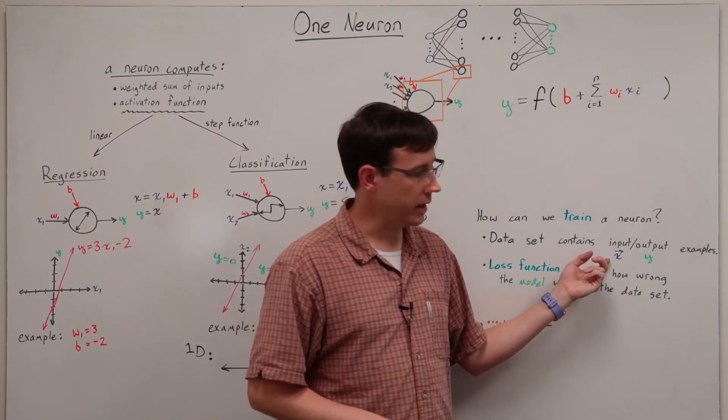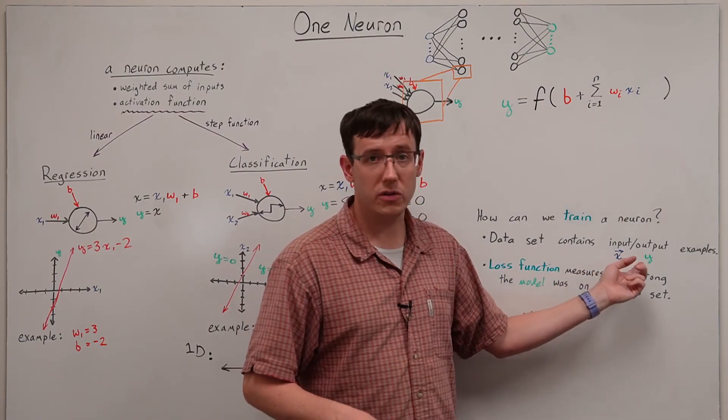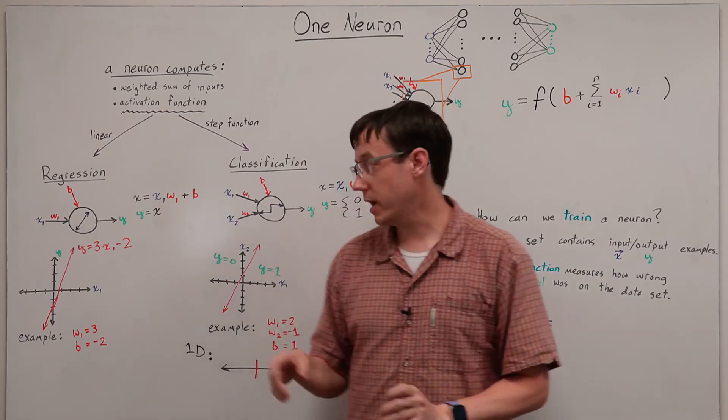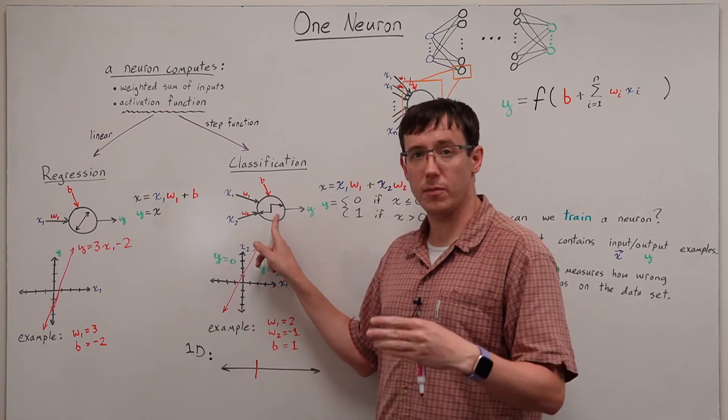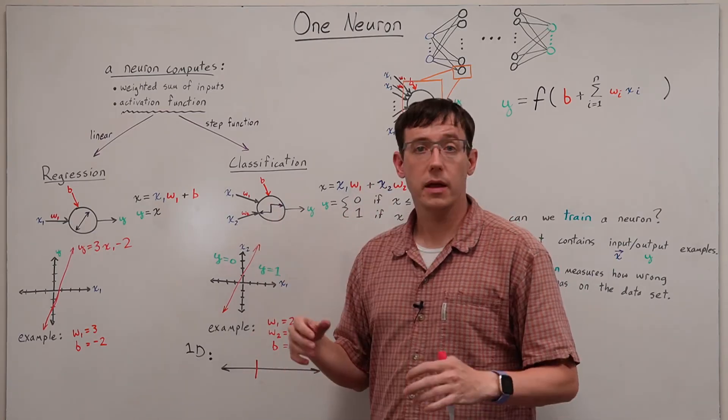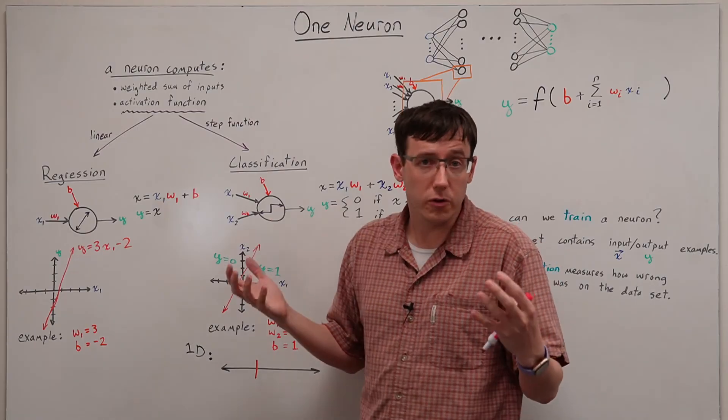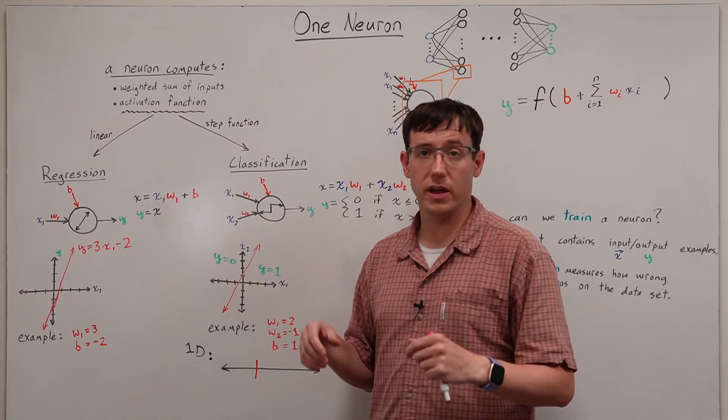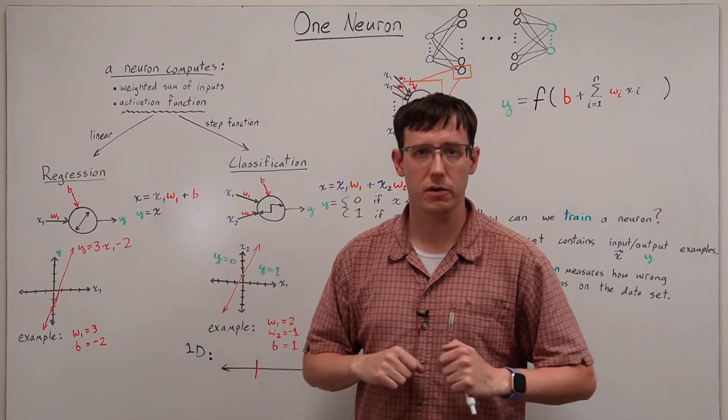On the other hand, if we had four-dimensional inputs and binary 0, 1 outputs, then we would choose a step function for our activation, and we'd be trying to solve the machine learning problem of picking the best value for all five of the resulting parameters.